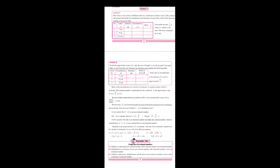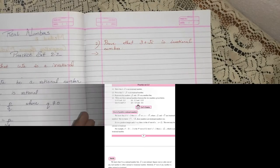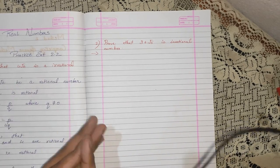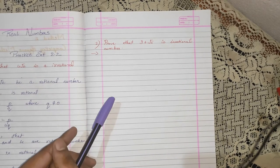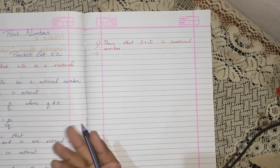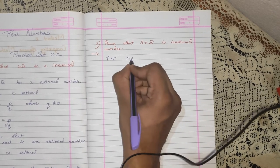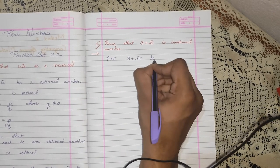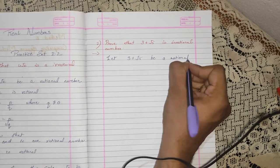The second problem is where we have to prove that 3 plus root 5 is an irrational number. As we saw the first sum, it will be similar — we have to again assume the contradiction. Let 3 plus root 5 be a rational number.